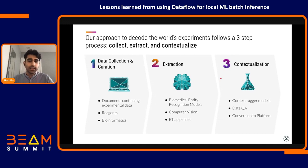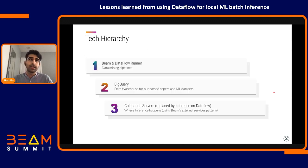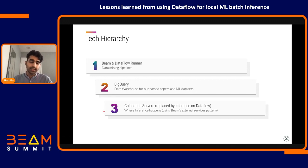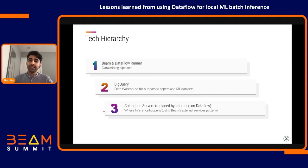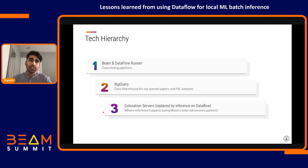This process entails a lot of data and ML pipelines. Our tech hierarchy looks like this: we use Beam and Dataflow Runner for data mining pipelines and ETL jobs; BigQuery is our data warehouse where all input-output datasets exist as source and sink; and the third item, the focus of this presentation, is our machine learning inference infrastructure, which used to be our co-location servers. Last year at Beam Summit 2020, our data team showed how they migrated data mining pipelines from Spark clusters to Beam and Dataflow. As an extension, this year we moved our inference-serving infrastructure to Dataflow as well, where we locally initialize our models inside Dataflow workers.